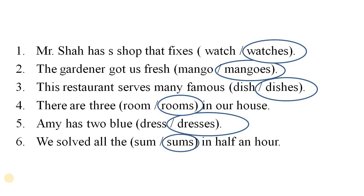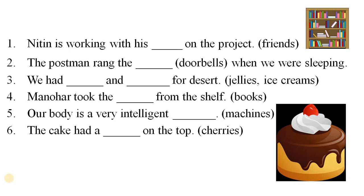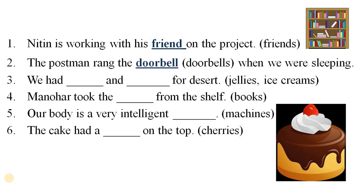Next exercise: write the singular forms of the nouns given in the brackets. The first is: Nitin is working with his blank on the project — the word is friends. The singular of friends is friend, so the sentence will be: Nitin is working with his friend on the project. The second is: the postman rang the blank when we were sleeping — the word is doorbells, and the singular is doorbell.